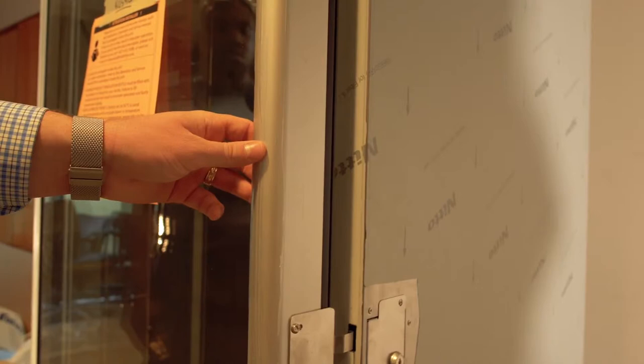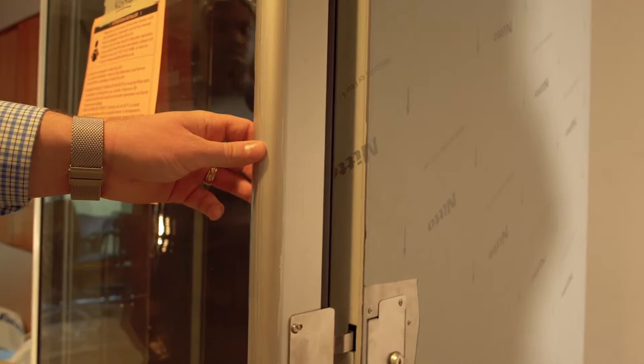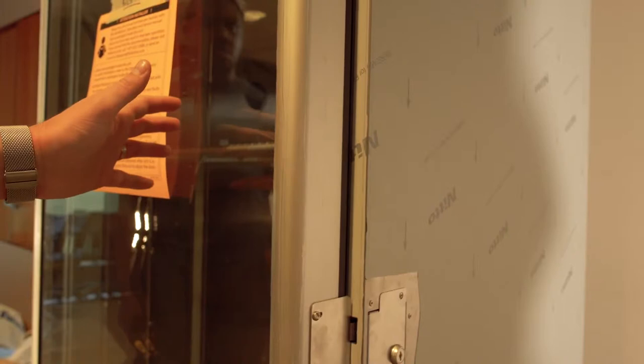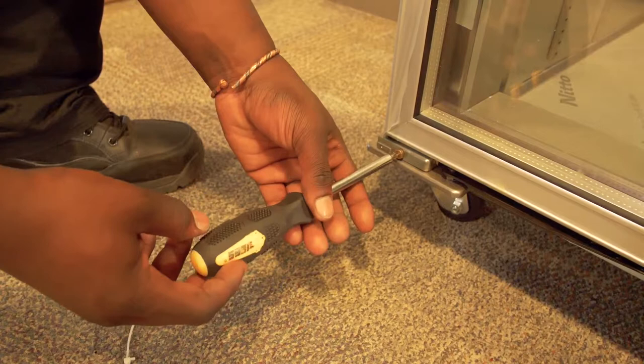Check that the refrigerator door tension is tight enough to close the door. To do this, with the door open, place the door in position where it is almost closed and then let go of the door. If the tension is tight enough, the door should close on its own.